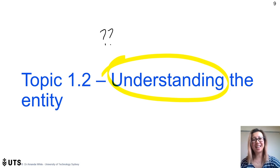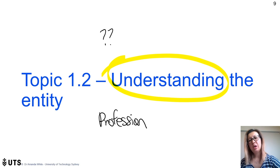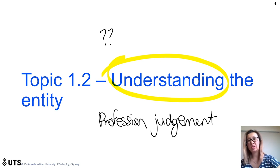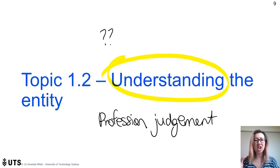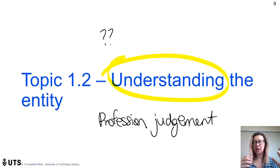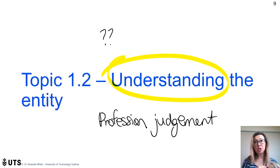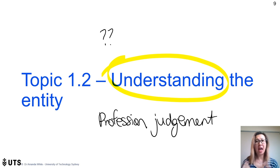Understanding the entity is one of those areas full of professional judgment — there's no specific number that defines 'an understanding.' Auditors describe it as a feeling: they have a mental model of what the client should look like, and when information conflicts with that model they search further. This understanding develops over time, and junior staff have less developed mental models than experienced partners. But ASA 315 gives us specific lists to work from.